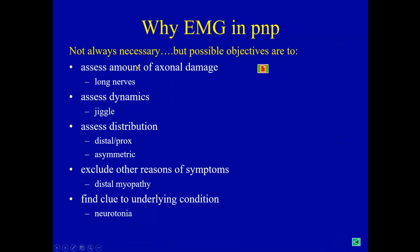EMG is not always necessary, particularly when we follow a patient over time. It may be enough to have EMG at one occasion and then rely on neurography data. But if we do EMG, we must have some reason for it: to assess the amount of axonal damage — therefore long nerves should be tested — to assess the dynamics of the process, whether it is active reinnervation or an old chronic situation, and the distribution: distal, proximal, and asymmetric. We should also exclude other reasons for the symptoms.